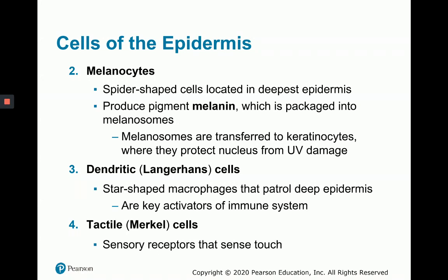Another cell type is the melanocyte. These are spider-shaped cells located in the deepest epidermis that produce the pigment melanin. Melanin is packaged into melanosomes, which can be transferred to keratinocytes. The reason melanin is useful in keratinocytes is that it protects the nucleus from UV damage. The more melanin that keratinocytes take in, the more protection they have against UV damage, which can cause cancer.